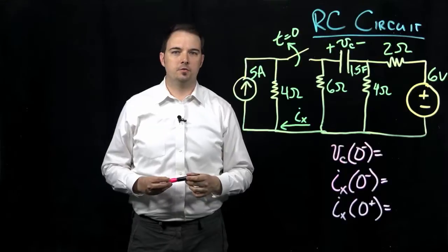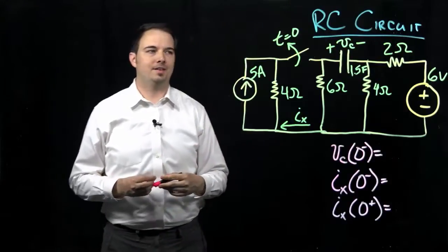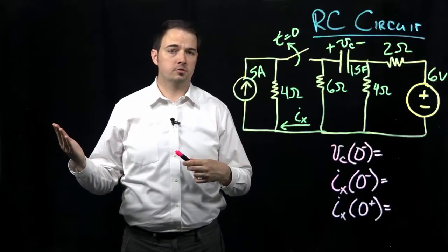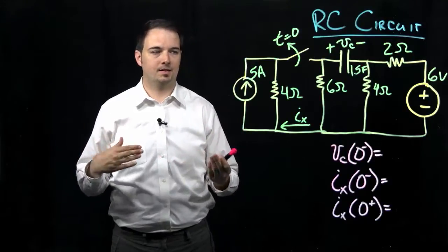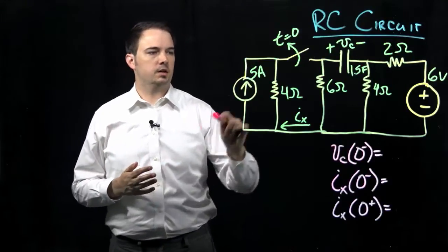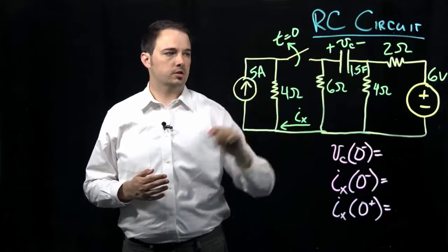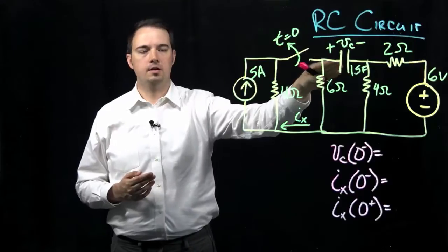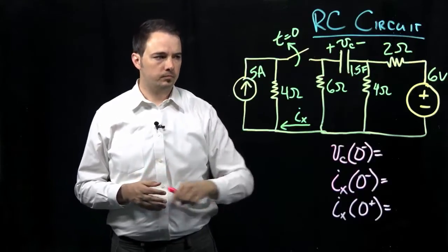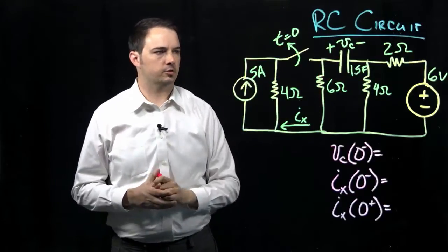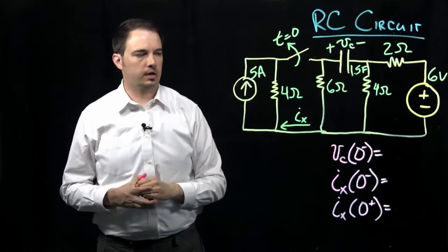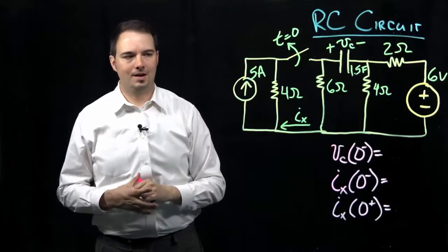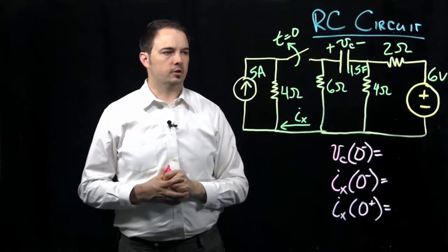Hi, I'm Dr. Kyle Montgomery, and in this video we'll be going through a problem of an RC circuit — meaning a circuit that has resistors and capacitors. In this case, we have a variety of resistors, a voltage source, a current source, and a capacitor sitting up in this branch. This is a 1.5 farad capacitor. The voltage Vc is indicated as the voltage across that capacitor, and we also have a current indicated here, I sub x, which we'll be looking at.